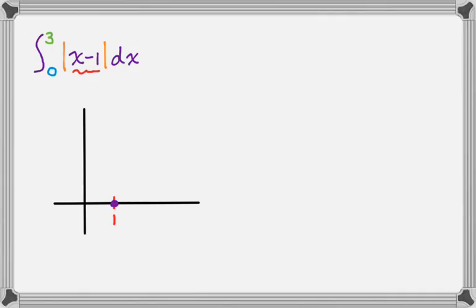Then I need to consider where this function is when x equals 0. So when x equals 0, you plug that in, it's the absolute value of negative 1, which is 1. I'm going to put a point there.